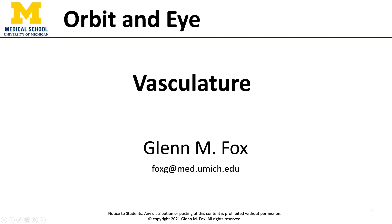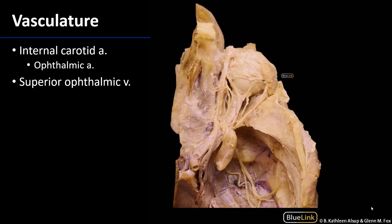Let's talk about the vasculature of the orbit. The orbit's blood supply is the ophthalmic artery, and it's drained by the ophthalmic veins. The ophthalmic artery is a branch of the internal carotid artery, which we can see here on its way into the cranial cavity. The internal carotid artery traverses the cavernous sinus, and its first branch is the ophthalmic artery.